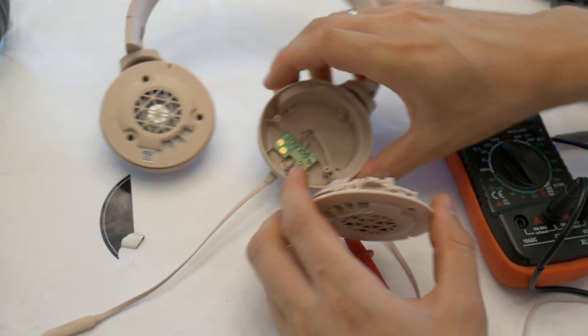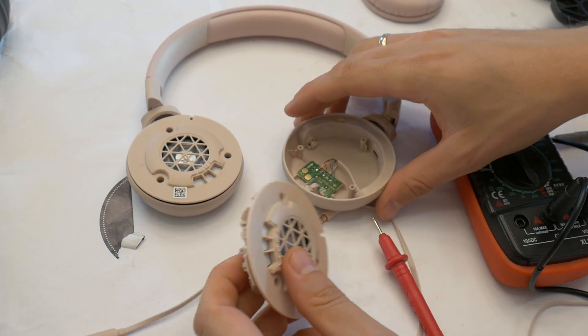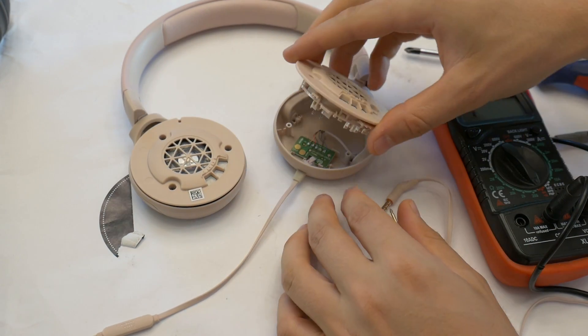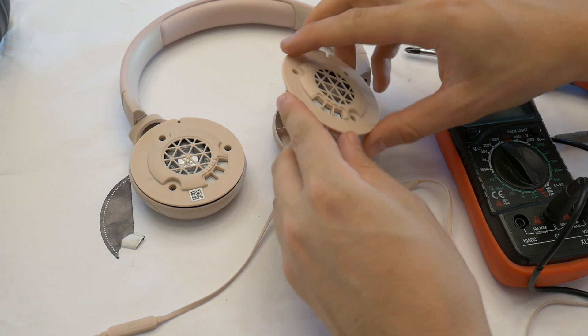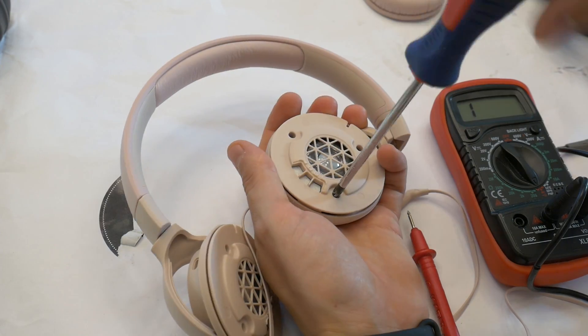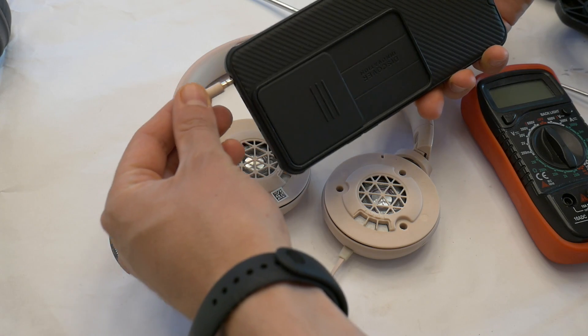When the springs are extended, you can start putting the headphone case together, but be careful. Make sure the springs are exactly against the mainboard. After that, tighten the screws of the headphone housing, connect them to a music source, and check if they work.